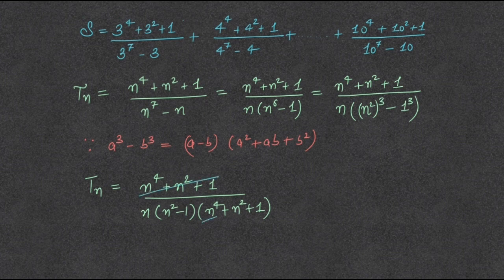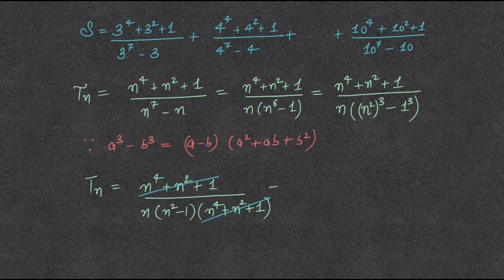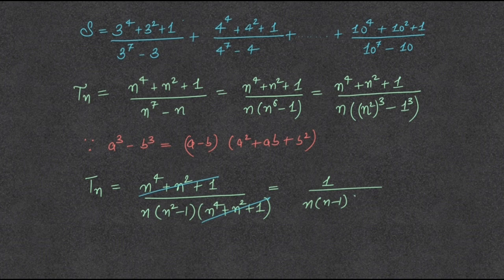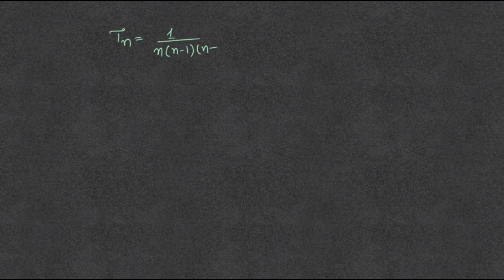Canceling the common factor, n square minus 1 can be written as n minus 1 into n plus 1. The general term is Tn is equal to 1 upon n into n minus 1 into n plus 1.